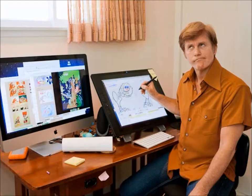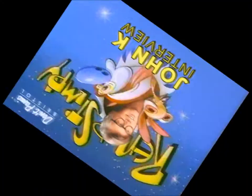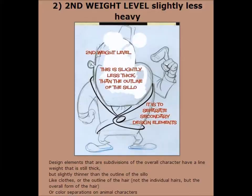This example still has a couple of mistakes — missing the cuff, the right side of the jacket fold. Legs should have more consistent weight with the rest of the character. The bottom of the left cuff should be inked in this weight. Design elements that are subdivisions of the overall character have a line weight that is still thick, but slightly thinner than the outline of the silhouette.